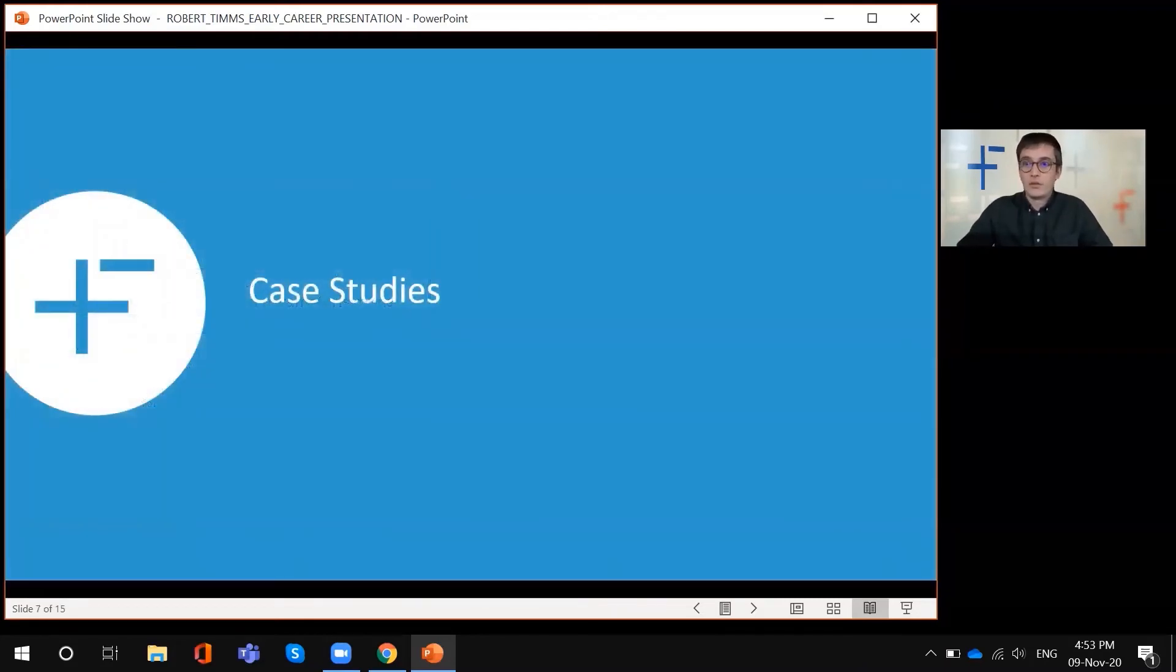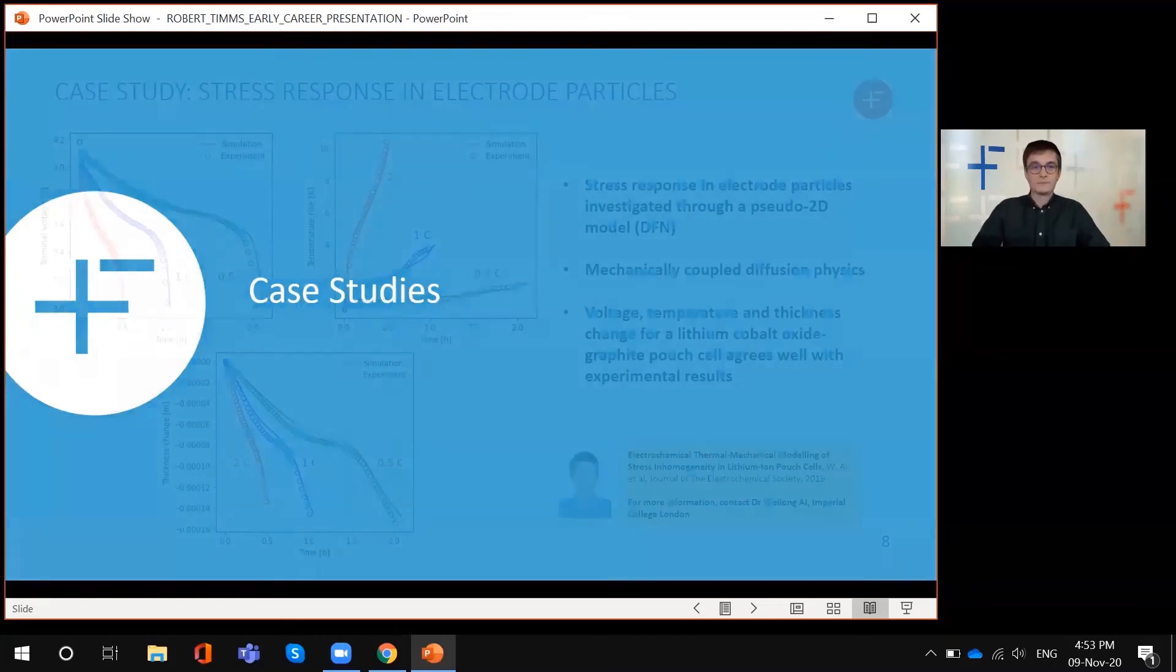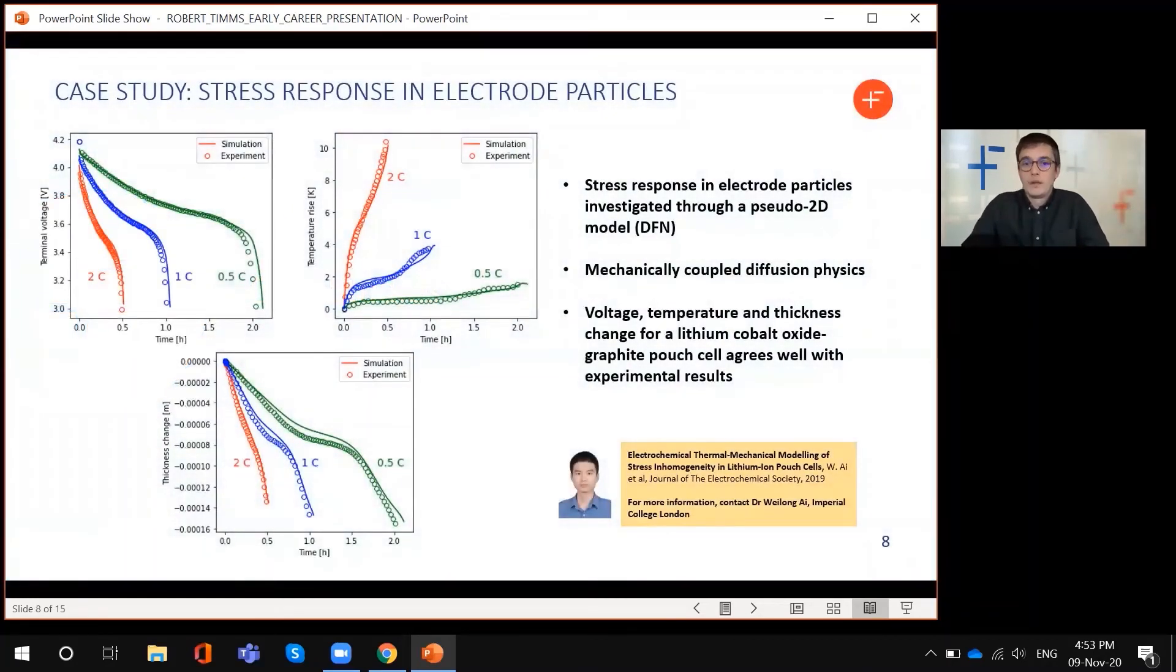I'm just going to use my last few minutes to run through some case studies to show the kind of things that are being done in PyBAMM. First of all, there's some work done at Imperial by Weilong Ai to include mechanical effects in the Doyle-Fuller-Newman model. In his work, he's got a model that describes the stress response of the electrode particles. This is coupled back into electrochemistry through stress-enhanced diffusion. On the left here, we've just got some images showing the comparison of the model results to the experimental data. You've got things for the terminal voltage, the temperature rise and the thickness change of the pouch cell during discharge. We see a good agreement between the model and experiments. This is an example of how you can do something more practical with PyBAMM in terms of getting research results for how cells might age over time due to mechanical effects.